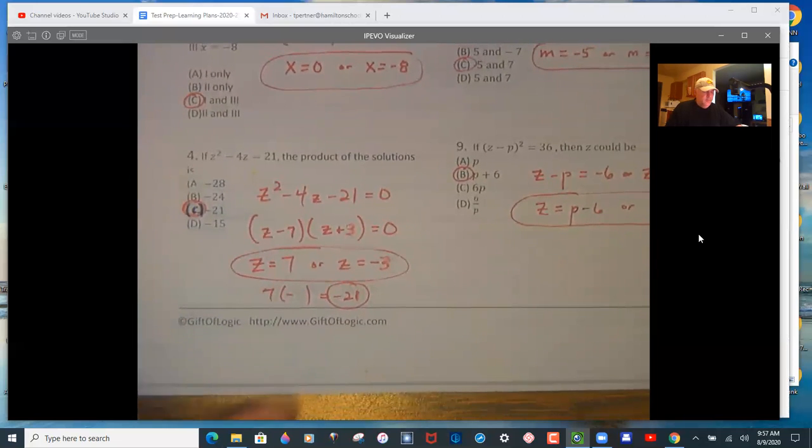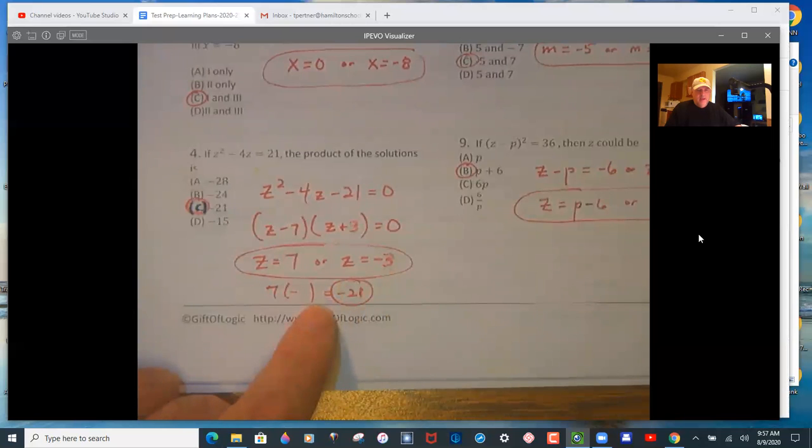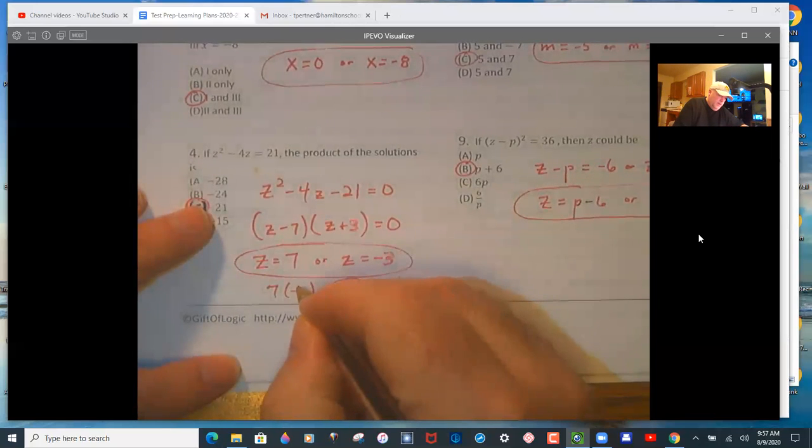Product of the solutions on 4, so you need to factor it out. Set them equal to 0, and you get 7 and negative 3. So that product is negative 21, and for some reason I whited this out.